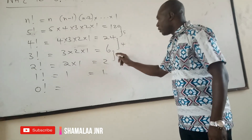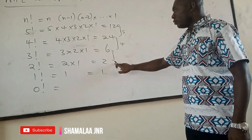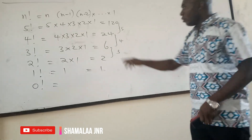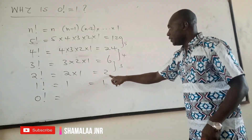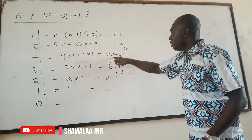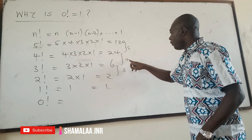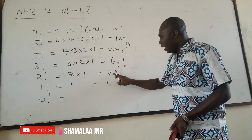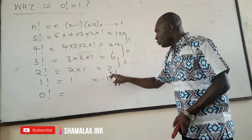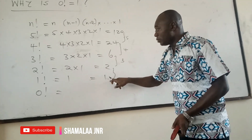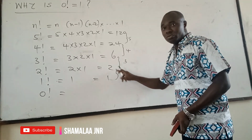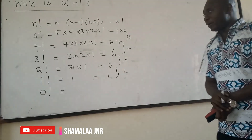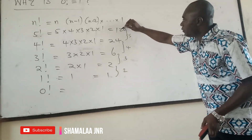When you have 3 factorial is 6 and you want to get to 2 factorial which is 2, you divide by 3, because 6 divided by 3 gives you 2. So the point is: 120 divided by 5 is 24, 24 divided by 4 is 6, 6 divided by 3 is 2. Now, if you are at 2 factorial which is 2 and you want to get to 1 factorial, you divide by 2. And when you divide 2 by 2, you are going to get 1. Look at what is happening.